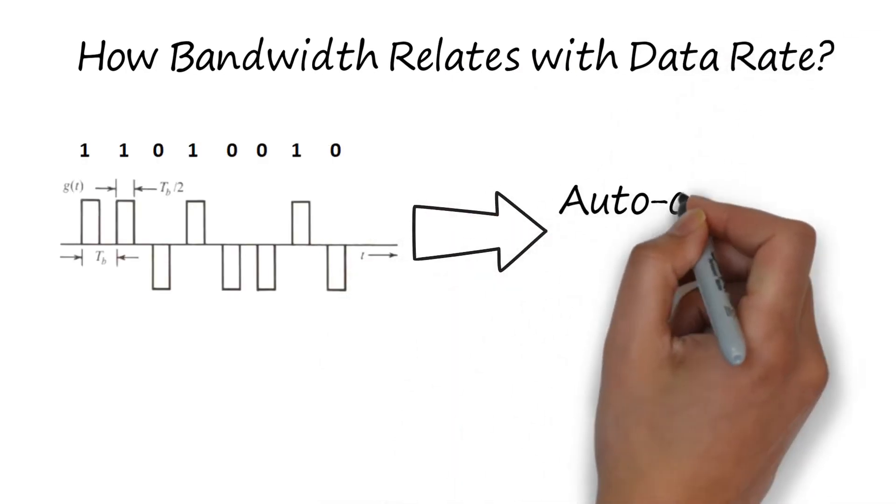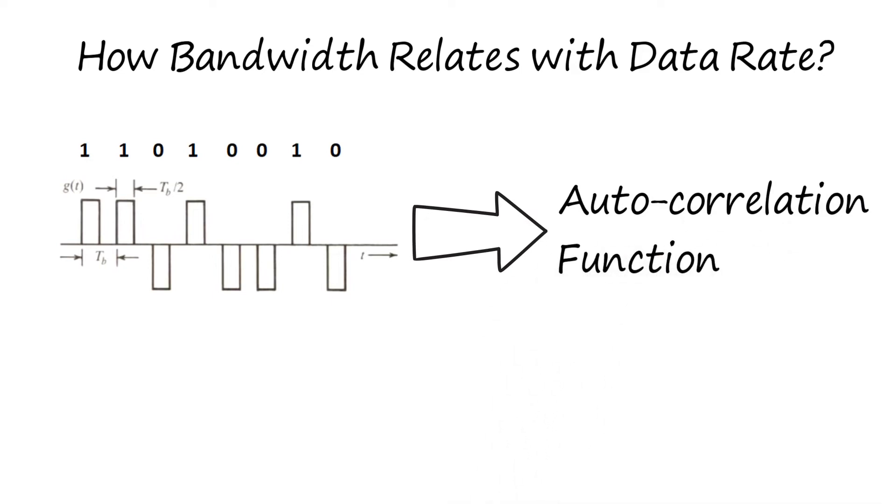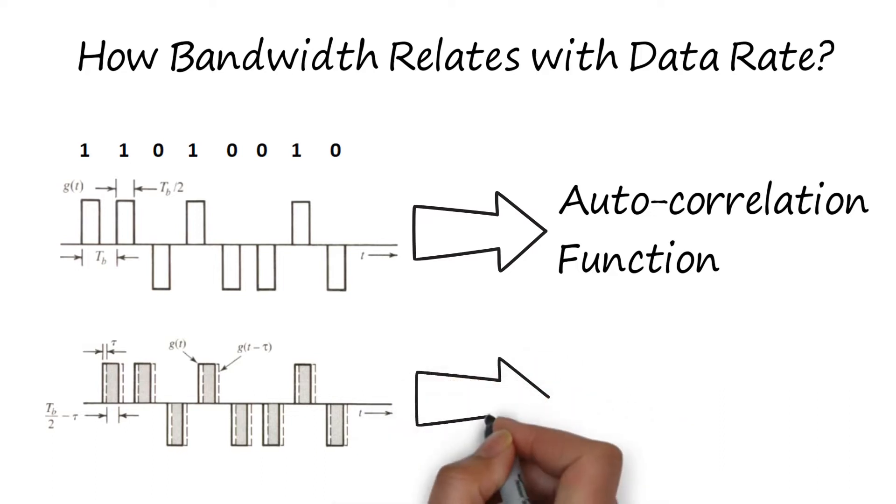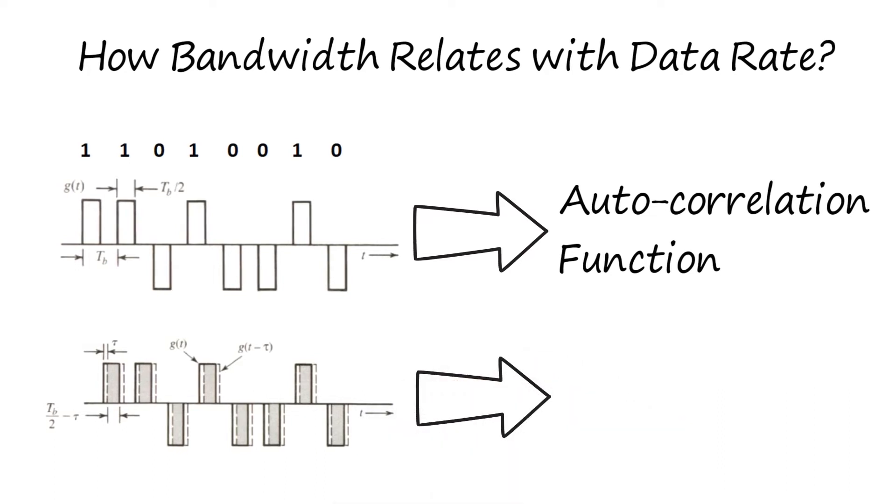For bandwidth we calculate the autocorrelation function, that is the correlation of data with the delayed version of itself. In the present case, the autocorrelation function is Rg(τ), which is a triangular function.